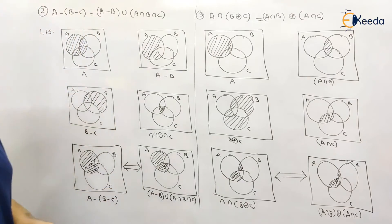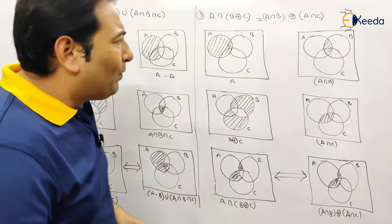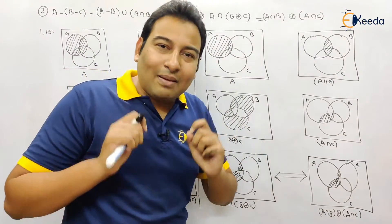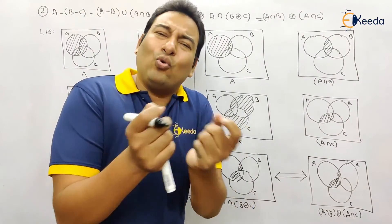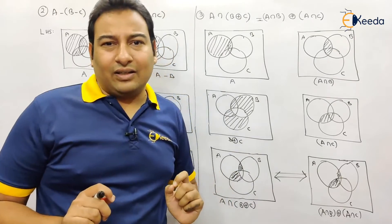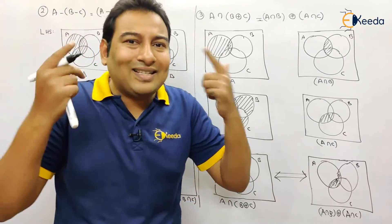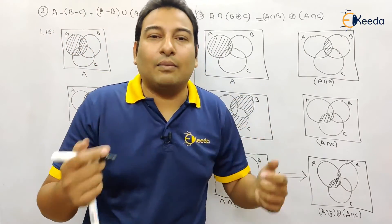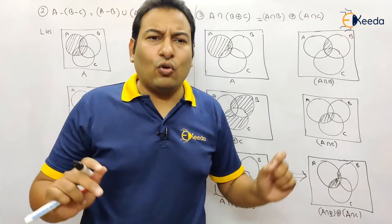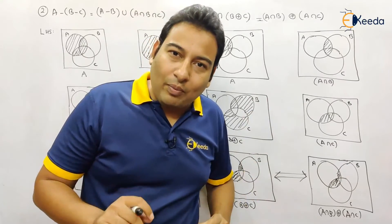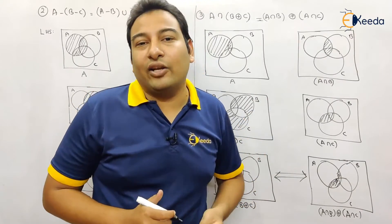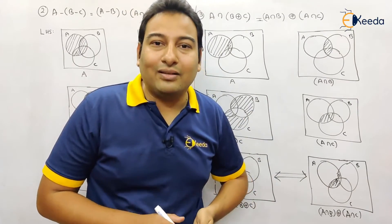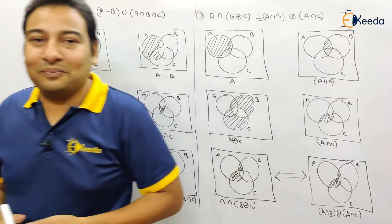We're done with Venn diagrams. Do it properly — draw step by step, that is the only key. Students try to imagine things and they end up messing up. So draw it properly and you will easily get your result. Hope you understood. Thank you.